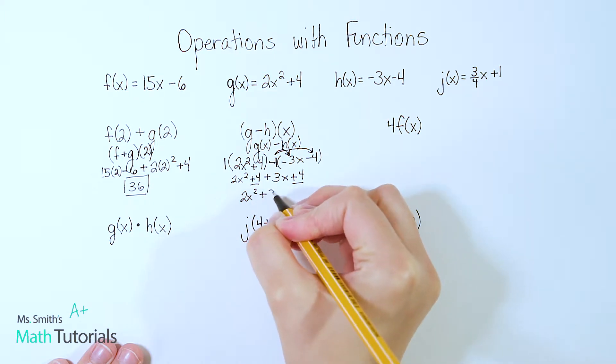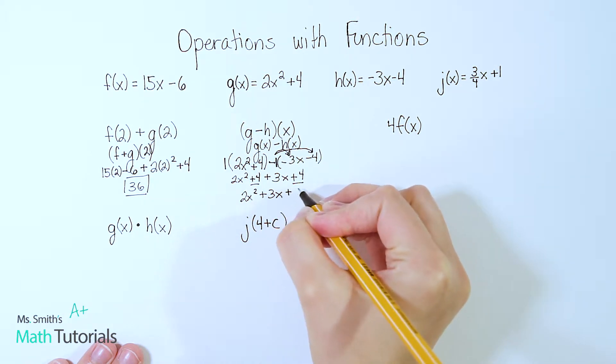At this point, I just want to combine like terms. The only like terms I see are this plus 4 and plus 4, which of course is 8. So we've got 2x squared plus 3x plus 8.